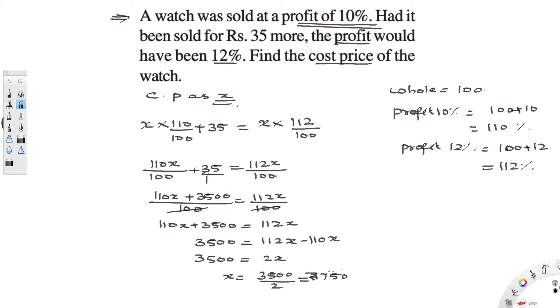So the cost price of the watch is 1750. So remember, whenever you see profit percentage or loss percentage, you just need to remember the whole is 100. If it is a profit, then I need to add the profit with 100. If it is loss, then you need to subtract the loss from 100.